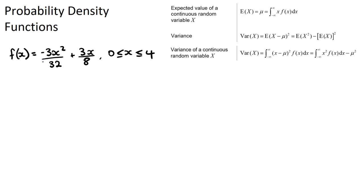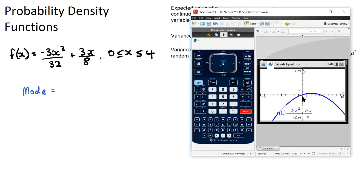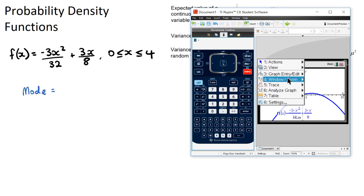Okay, so if we have a function given, the first thing that they'll ask for potentially is the mode. The mode, if we have a probability density function, we can find by graphing our function and finding where the maximum is. So let's get our calculator out. Now if we graph our function, let's set up a fraction first: negative 3x squared over 32 and then plus 3x on 8.